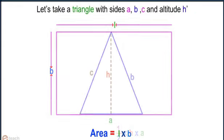Let's take a triangle with sides A, B and C and altitude H. We know that area of a triangle equals half into altitude into base. Therefore, area of a triangle equals half into H into A.